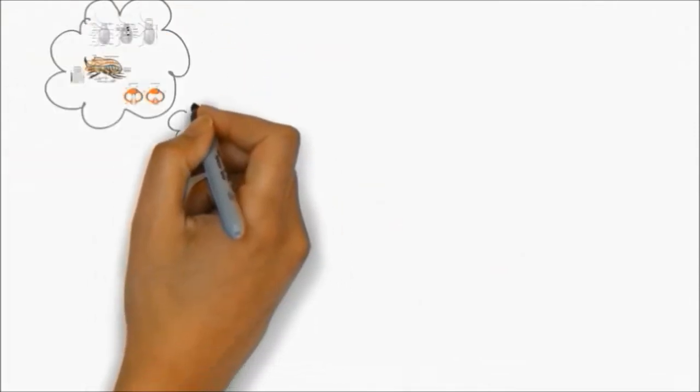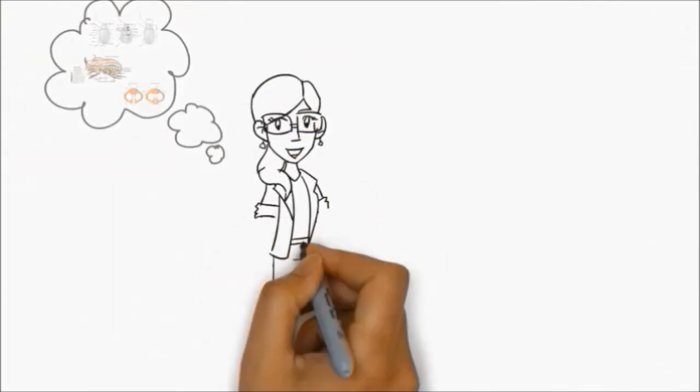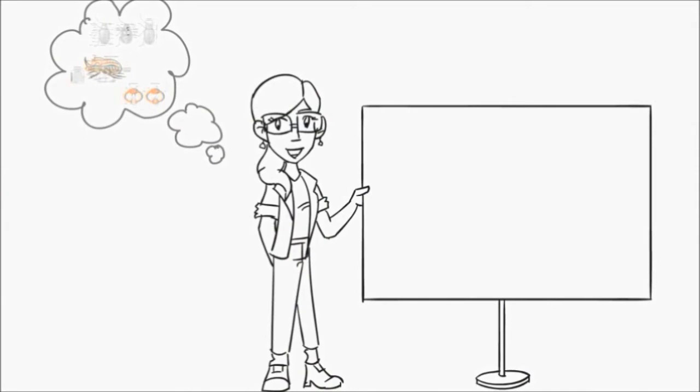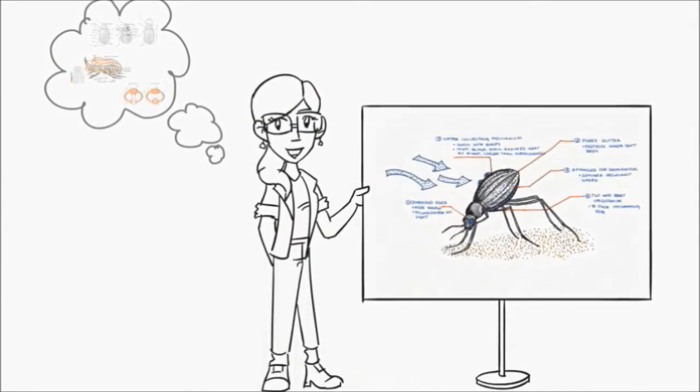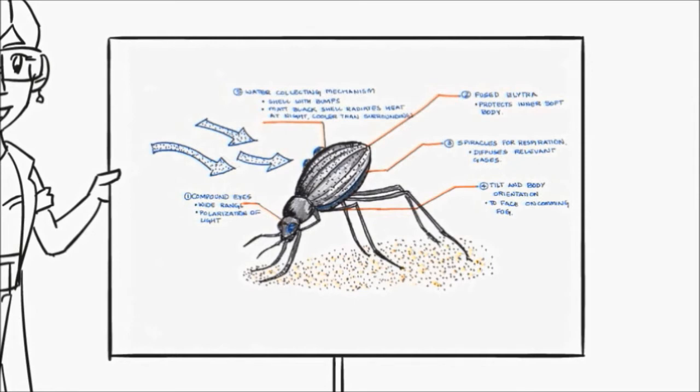Keeping these in mind, five interesting features of the beetle were adopted. They are: one, its compound eyes; two, diffused elytra; three, spiracles for respiration; four, tilt and body orientation; and five, water collection mechanism.